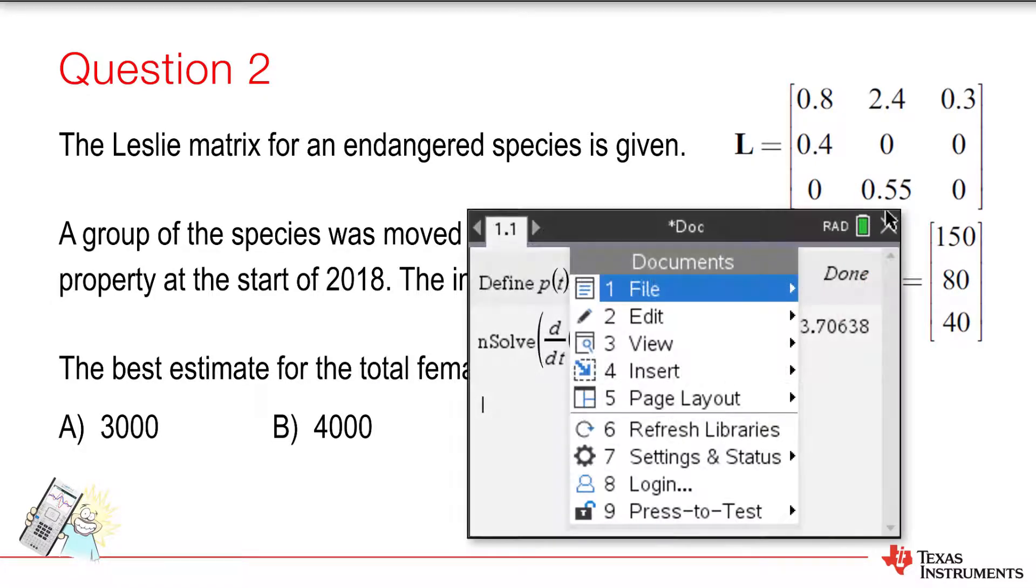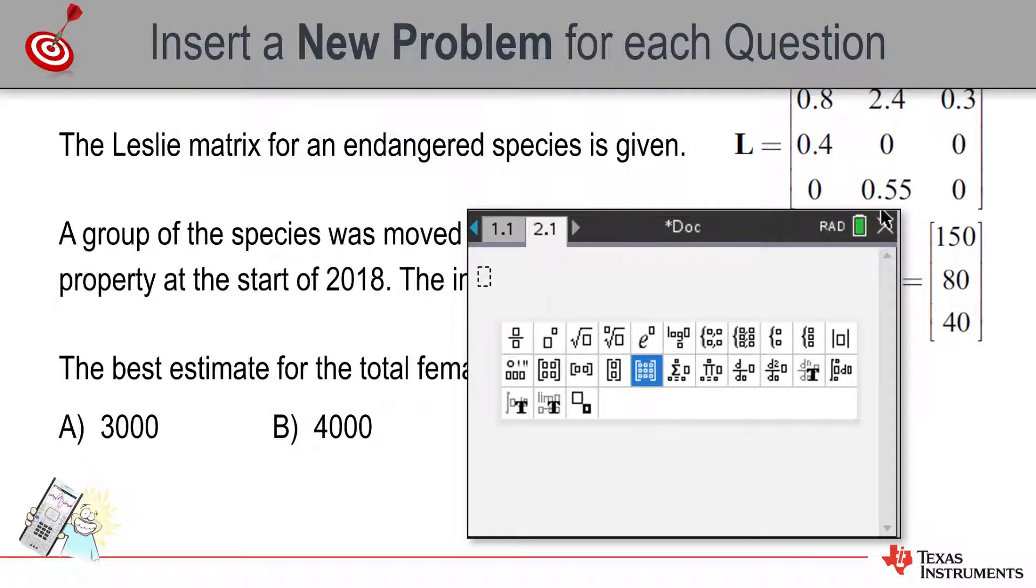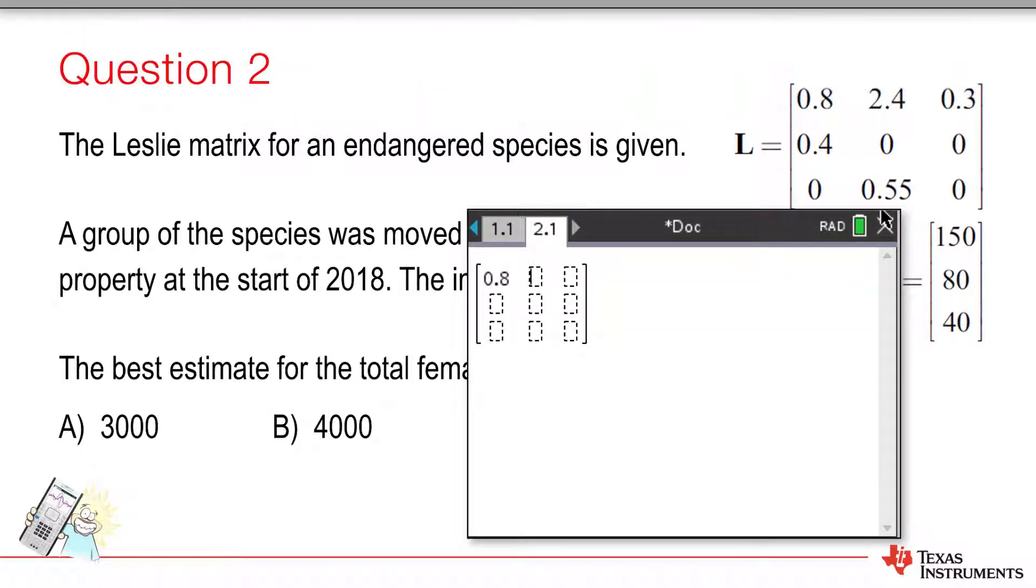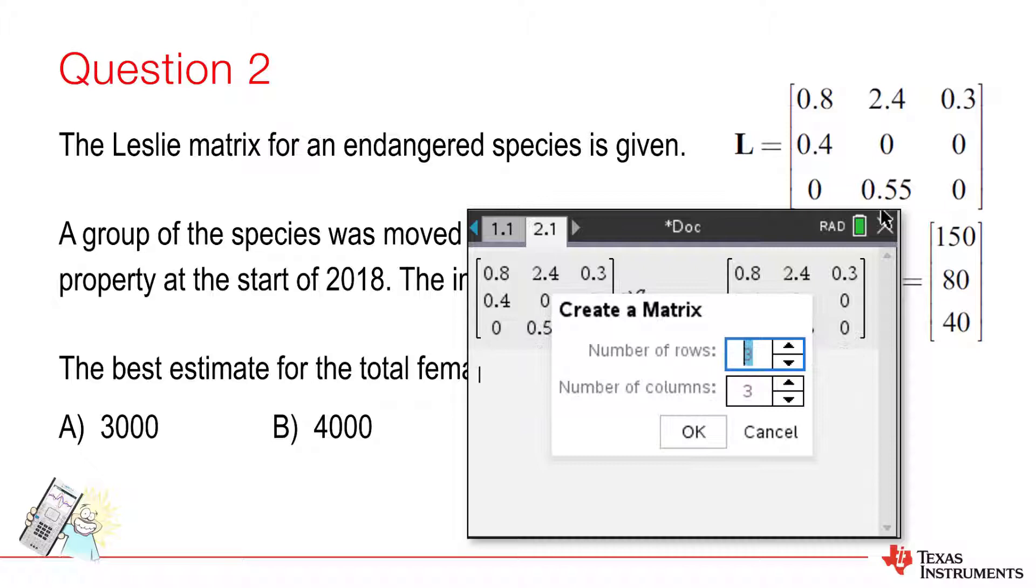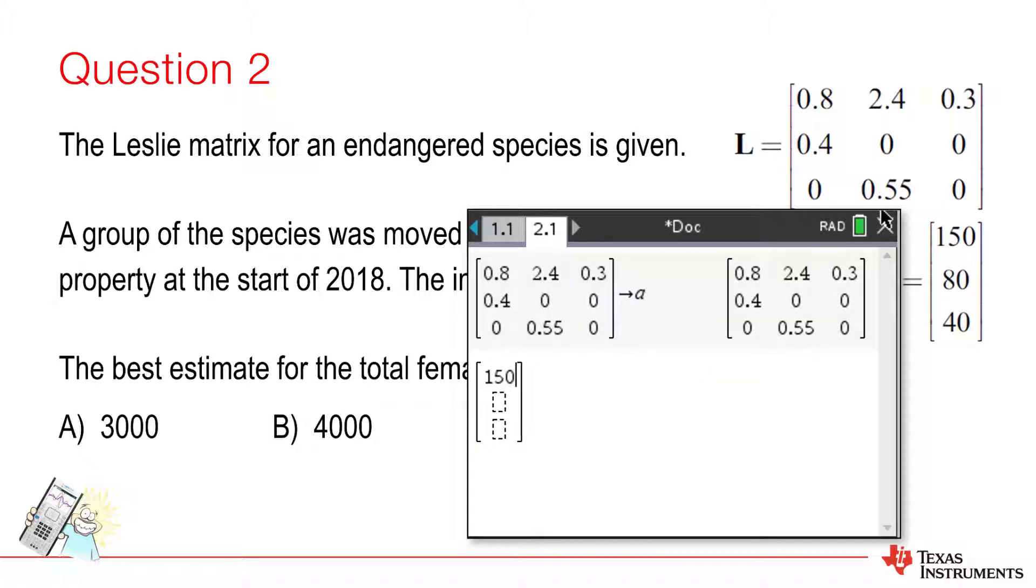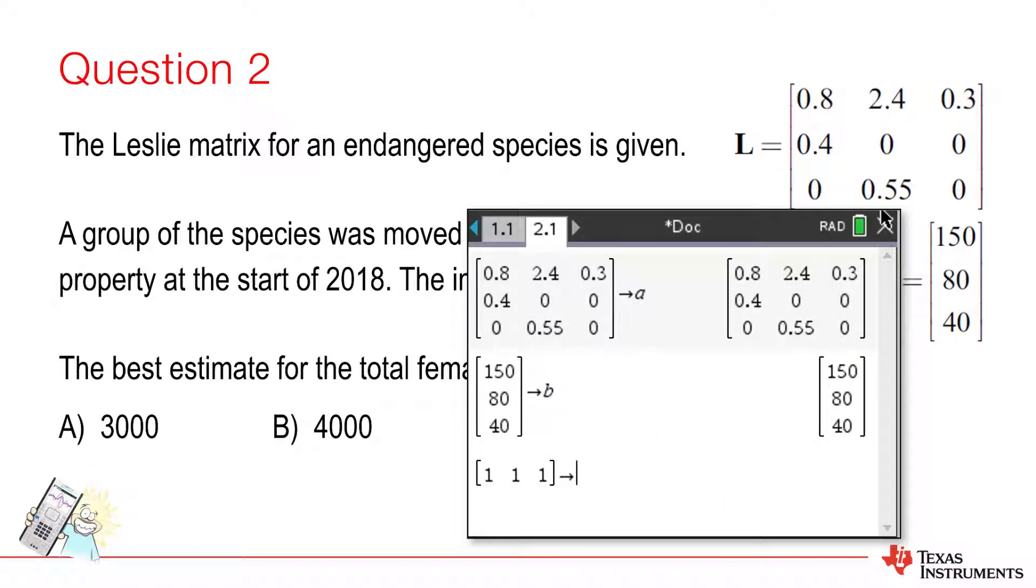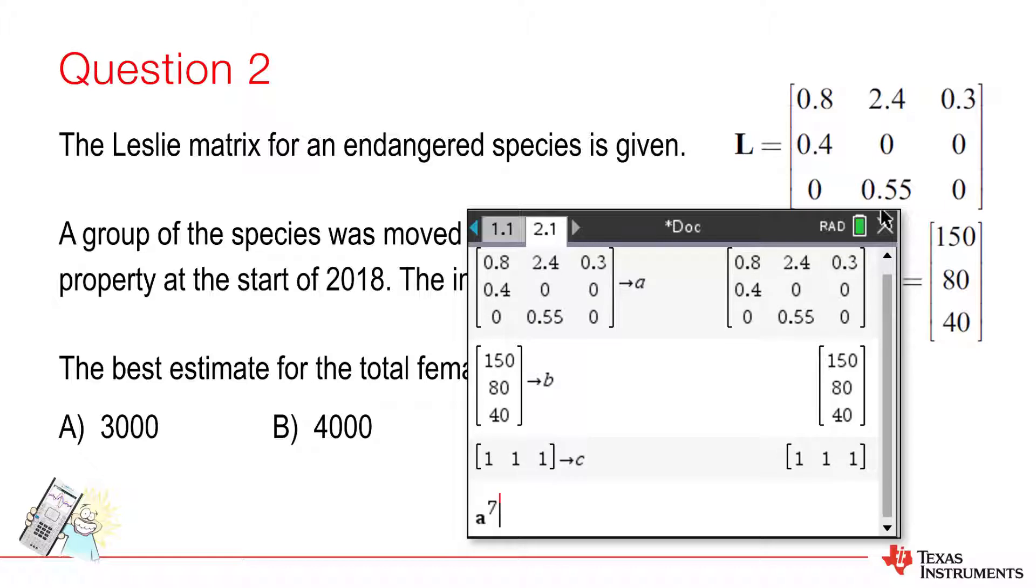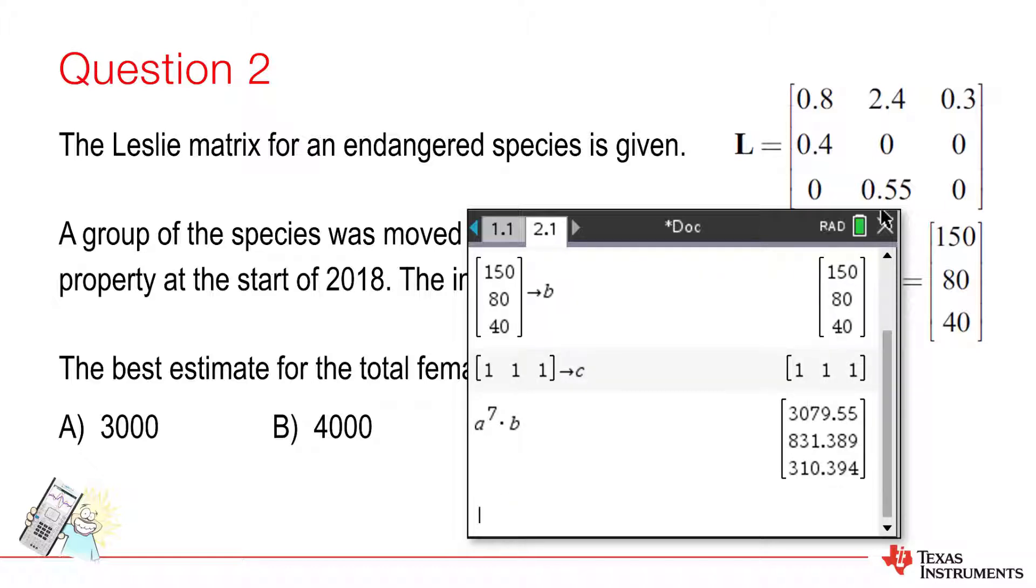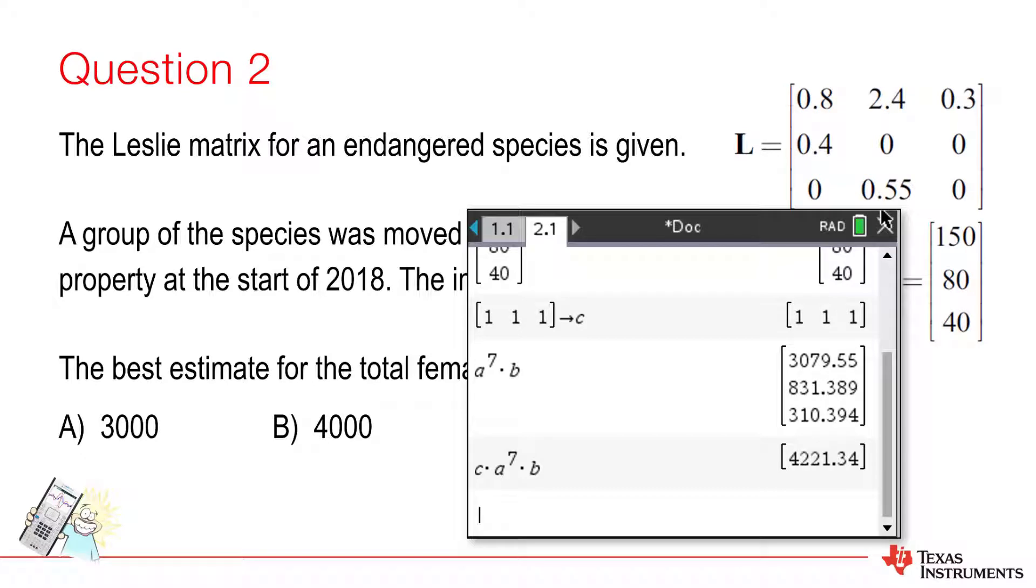Let's start with the Leslie matrix. Now we need to raise the Leslie matrix to the power of 7, then multiply it by the initial population matrix. We could add the values mentally and see the result is close to 4000. Alternatively, you could multiply by a column vector. So, the answer is option B.